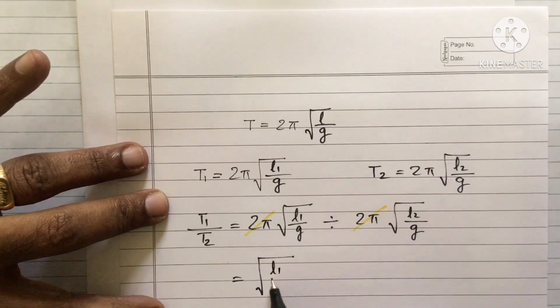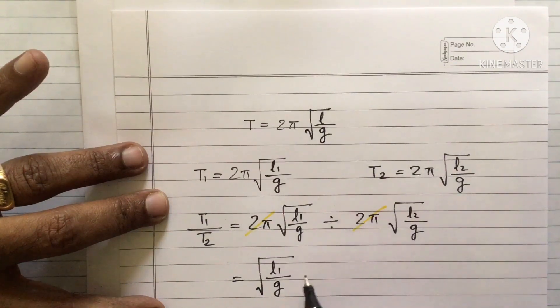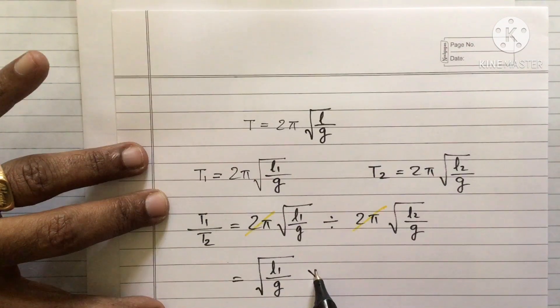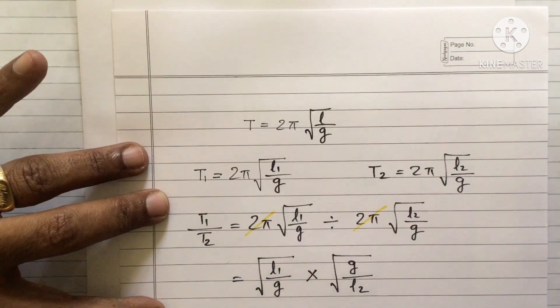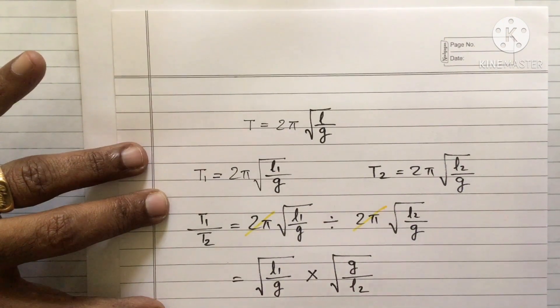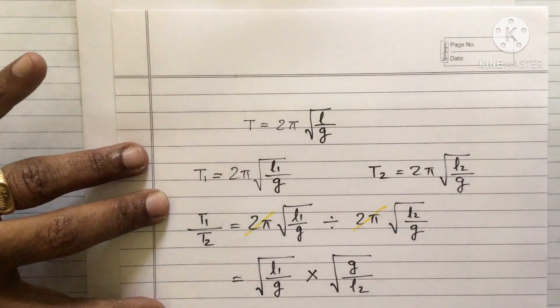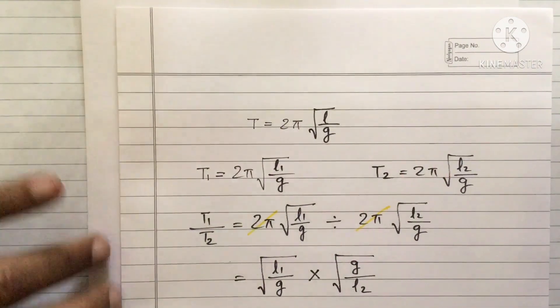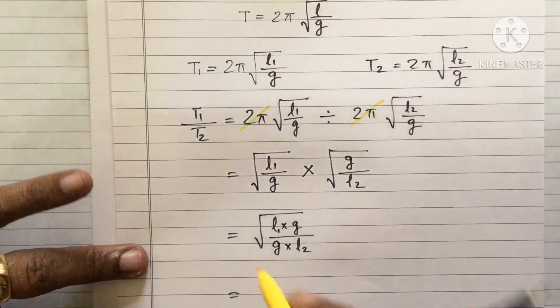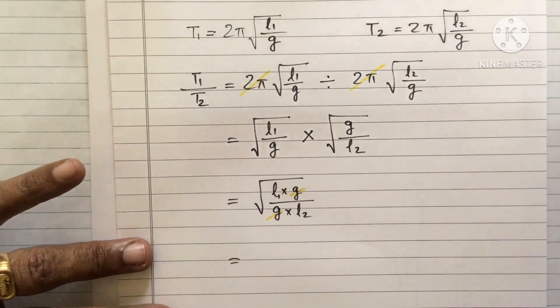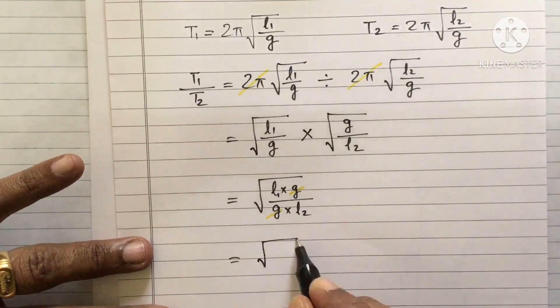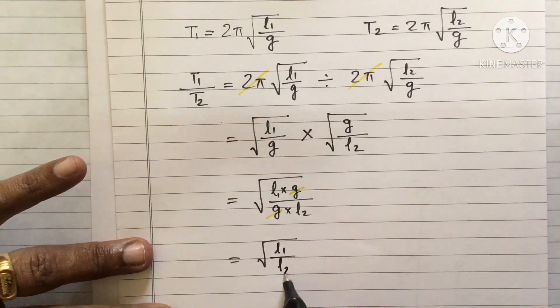This will be square root of L1 by G. This division sign I am changing that into multiplication. Then here I must use the reciprocal you know. G by L2. That is square root of L1 into G divided by G into L2. And as you understand this G and G get cancelled and you will get square root of L1 by L2.